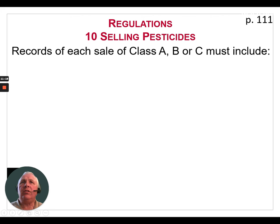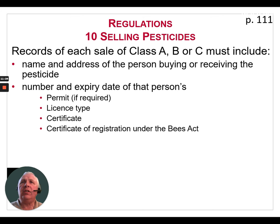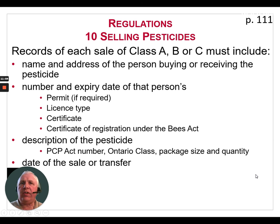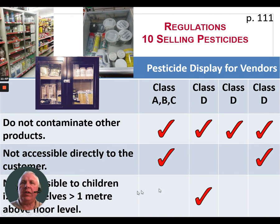When it comes to records that must be kept for Class A, B, or C, these records must include: the name and address of the person buying or receiving the pesticide; the number and expiry date of that person's permit, license type, certificate, or certificate of registration under the Bees Act (including the Grower Pesticide Safety Course number and expiry date); a description of the pesticide including the PCP Act number, Ontario classification, package size, and quantity; and the date of the sale or transfer.